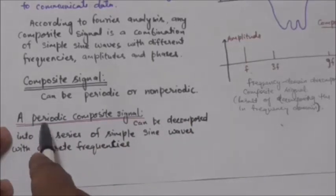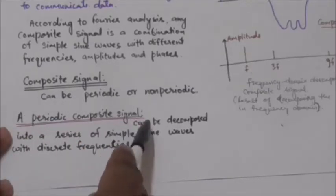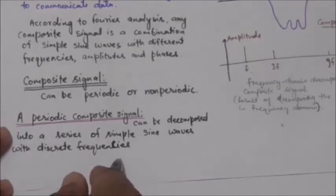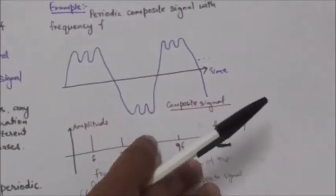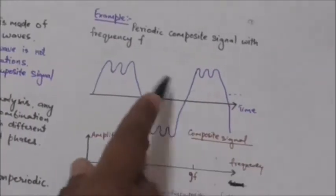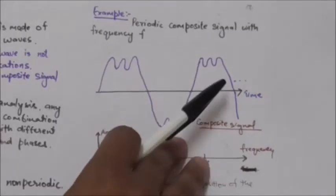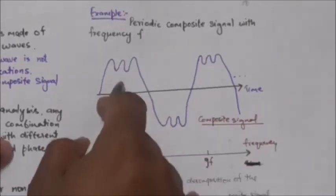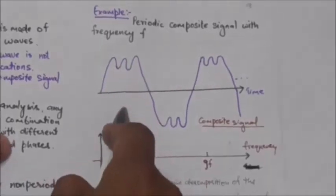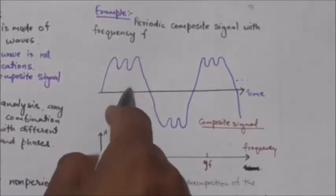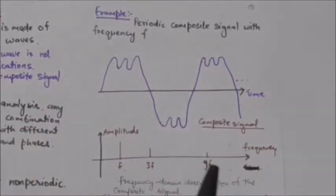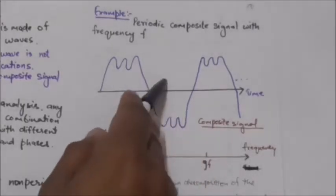A composite signal can be periodic or non-periodic. First we will study about periodic composite signals. A periodic composite signal can be decomposed into a series of simple sine waves with discrete frequencies. In this example, this figure shows a periodic composite signal with frequency f. There are hardware and software tools which can decompose this signal into a series of simple sine waves.